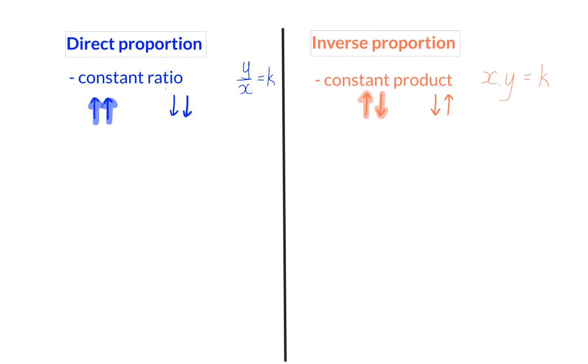So, when doing a question about proportion, your first step is always to determine whether it is direct proportion or inverse proportion, because that will determine whether your first step will be division to get the constant ratio or multiplication to get the constant product.